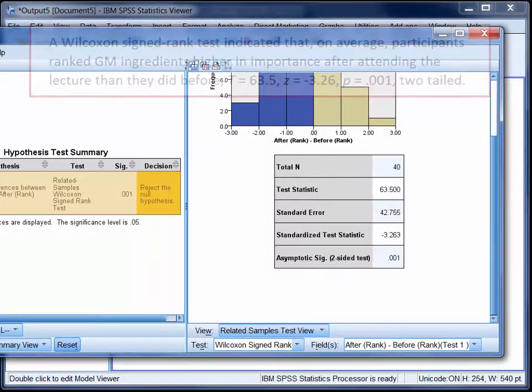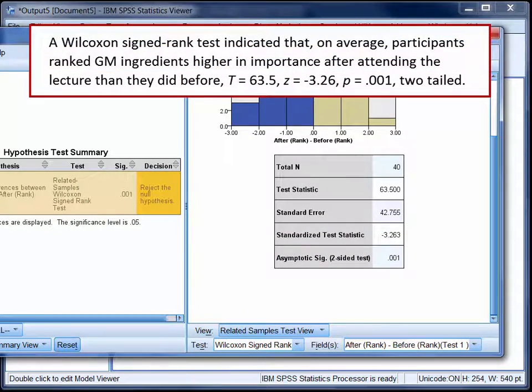So you could write up the findings like this. A Wilcoxon signed rank test indicated that, on average, participants ranked GM ingredients higher in importance after attending the lecture than they did before.